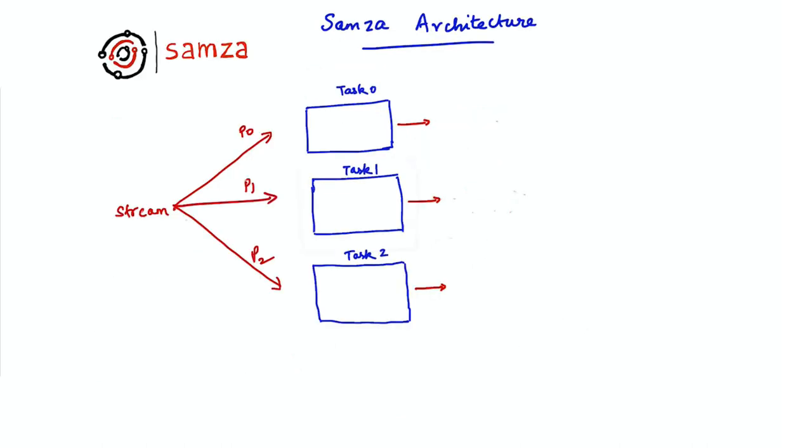To scale processing, your application is broken down into smaller units of logical parallelism called tasks. Each task is assigned to process one or more partitions in your input stream. In this example, task 0 processes partition 0, task 1 processes partition 1, and so on. Each task can then instantiate the DAG based on the partitions assigned to it.